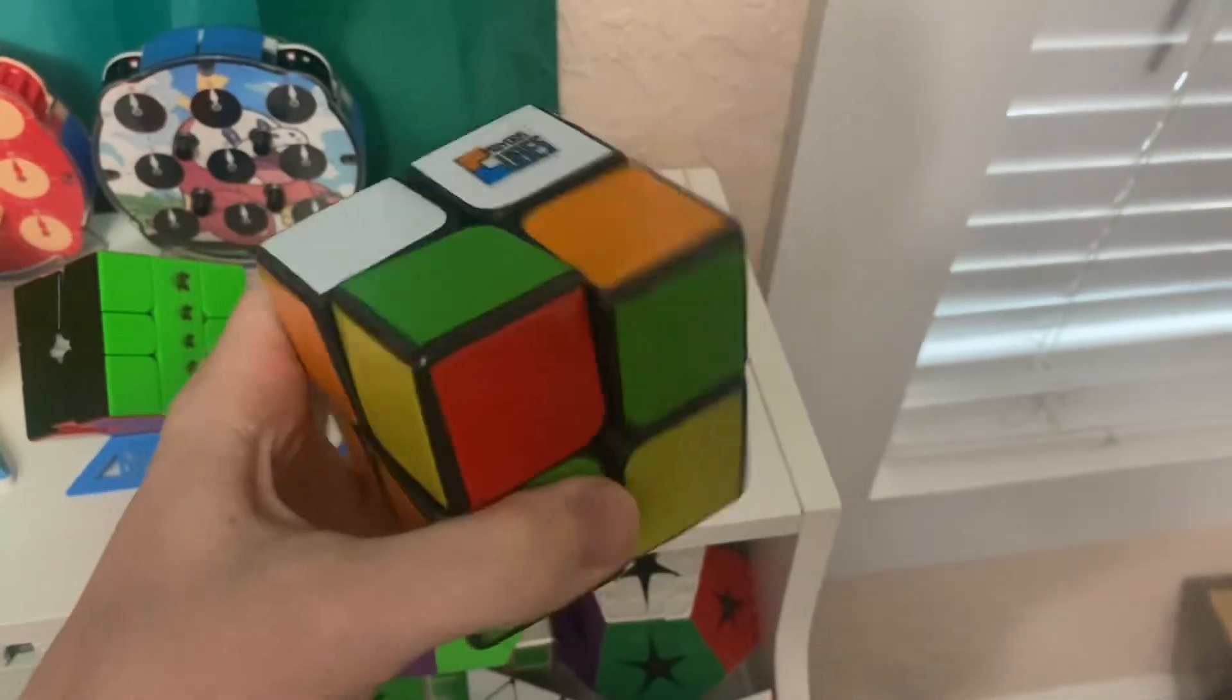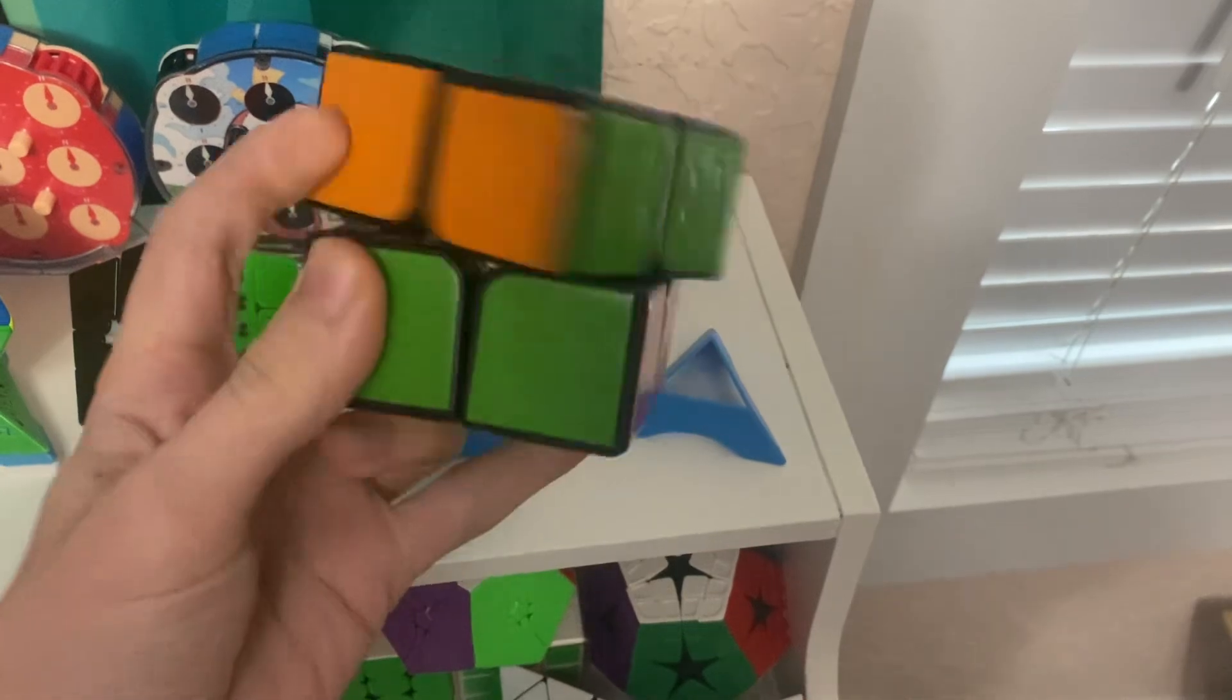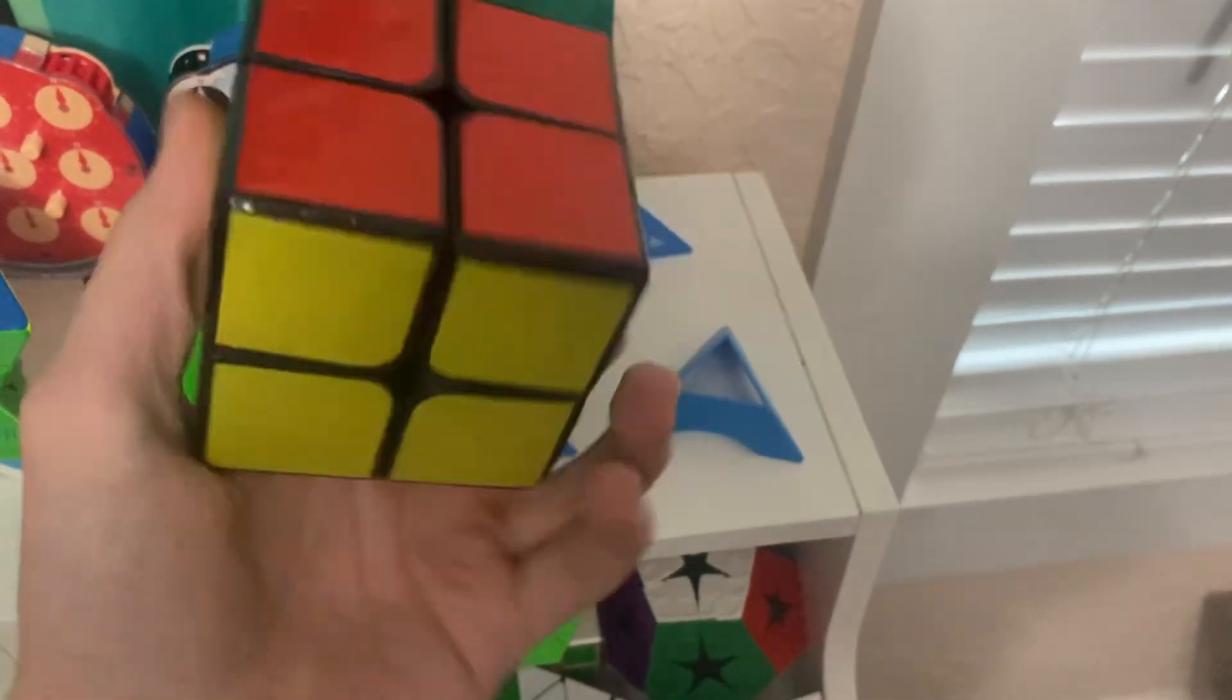Alright, 2x2. I'm going to be using the giant 7cm 2x2. Hoping for a sub-3.5 average and a fluke PR single.